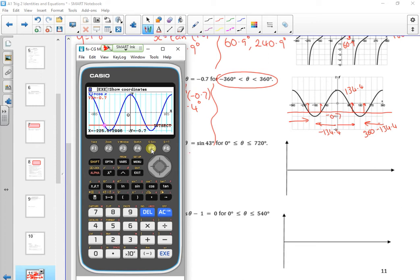So theta is minus 225.6, using the completed graph. Minus 134.4, 134.4, and 225.6 there.